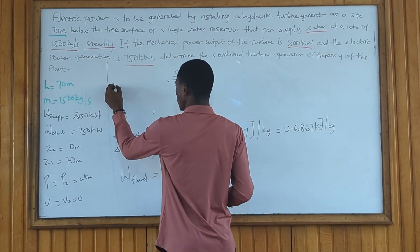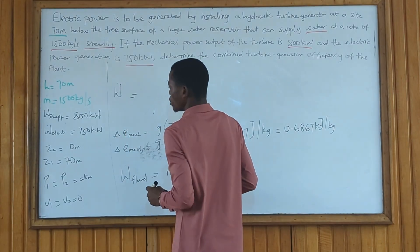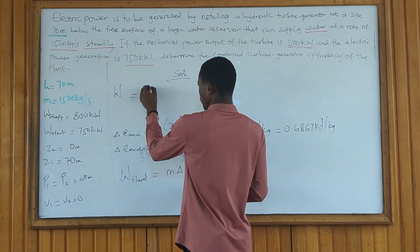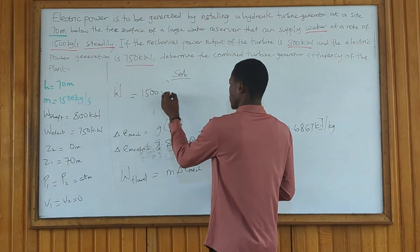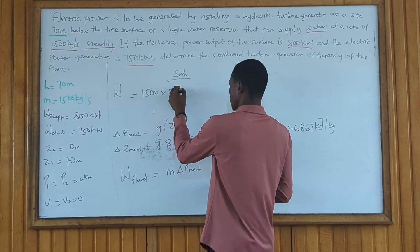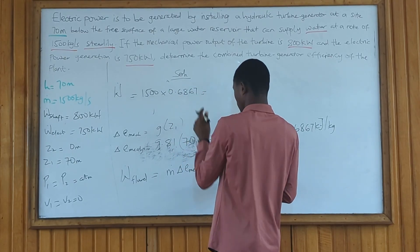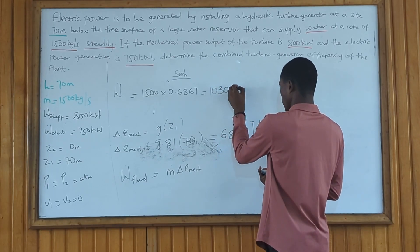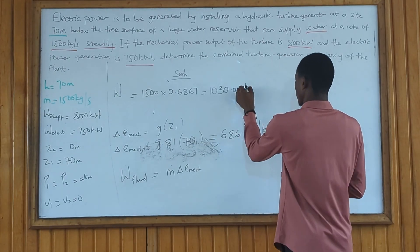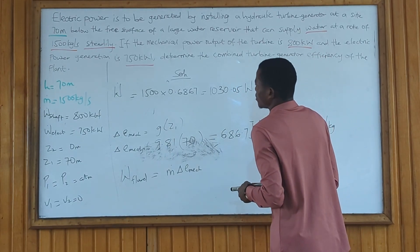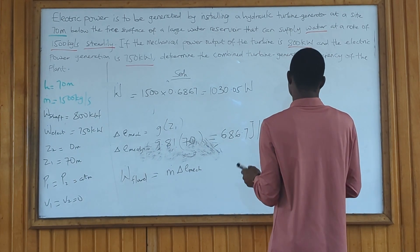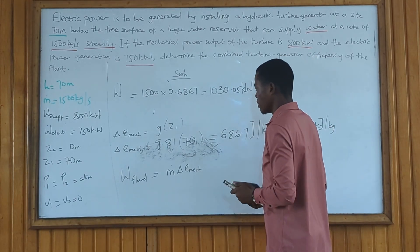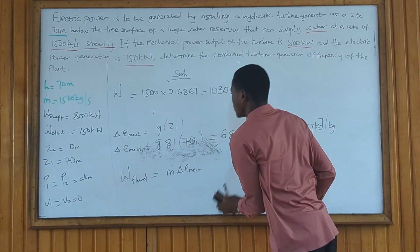We know our mass flow rate equals 1500, so 1500 times 0.6867 equals 1030.05 kilowatts.